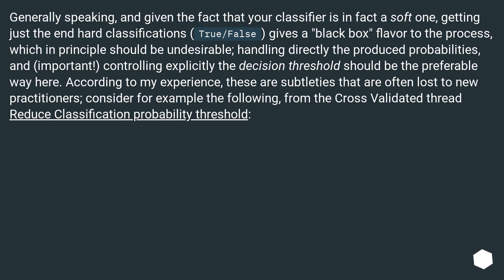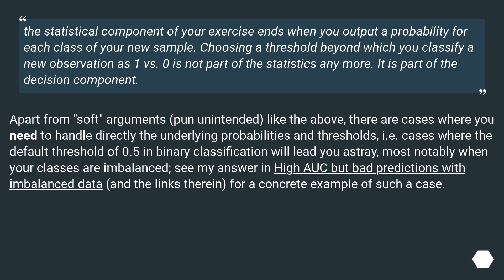According to my experience, these are subtleties that are often lost to new practitioners. From the cross-validated thread 'Reduce Classification Probability Threshold': the statistical component of your exercise ends when you output a probability for each class of your new sample. Choosing a threshold beyond which you classify a new observation as 1 versus 0 is not part of the statistics anymore — it is part of the decision component. There are cases where the default threshold of 0.5 in binary classification will lead you astray, most notably when your classes are imbalanced.